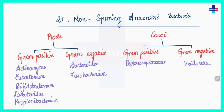Let's start with this chapter. This is a small chapter in which we will discuss non-sporing anaerobic bacteria — bacteria which grow only in the absence of oxygen. These bacteria can be classified based on their structure: there can be non-sporing anaerobic rods and non-sporing anaerobic cocci.